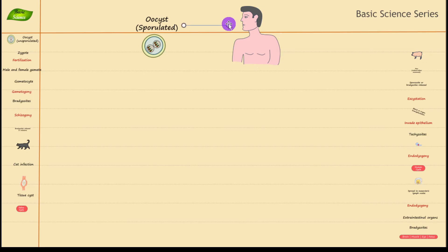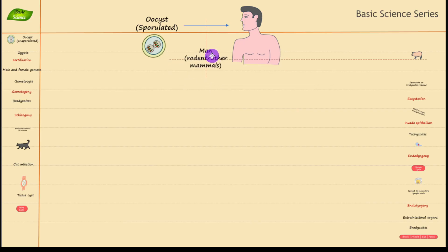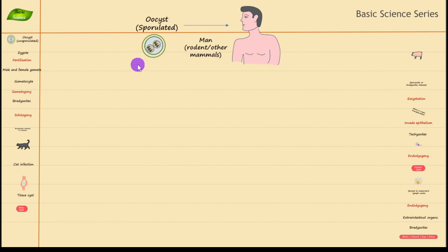We call the cat the definitive host because sexual cycle happens inside it, while asexual reproduction happens in intermediate hosts. The sporulated oocyst can be transferred from one organism to another. Humans, rodents, and other mammals can get infected with the sporulated oocyst — that is step one, where the sporulated oocyst containing sporozoites enters the host.